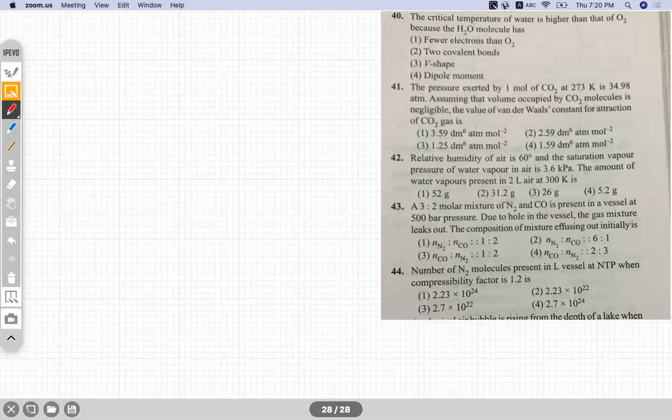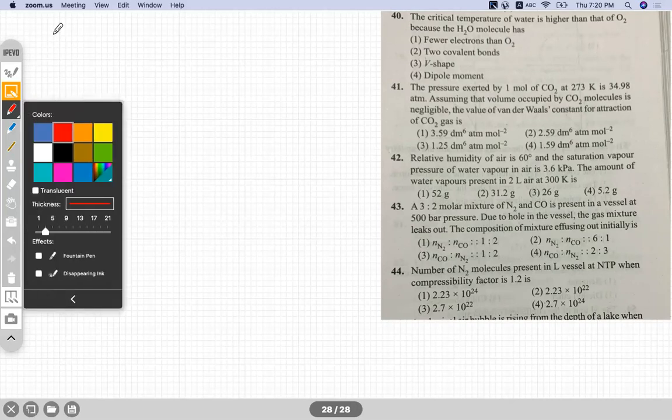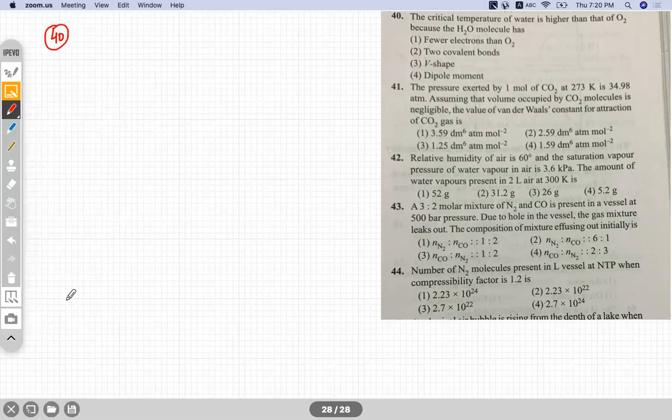See, these five questions we are going to see. Question number 40. The critical temperature of water is higher than that of O2 because the H2O molecule has - these options are given.